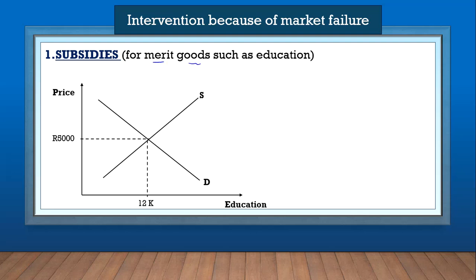Let's look at the impact of a subsidy. Let's say the market decided that the price of education should be five thousand at a given quantity. The subsidy will then result in more supply for education — the supply curve shifts from S to S1 — and we will now have a new equilibrium price and a new equilibrium quantity, let's say at fourteen thousand.